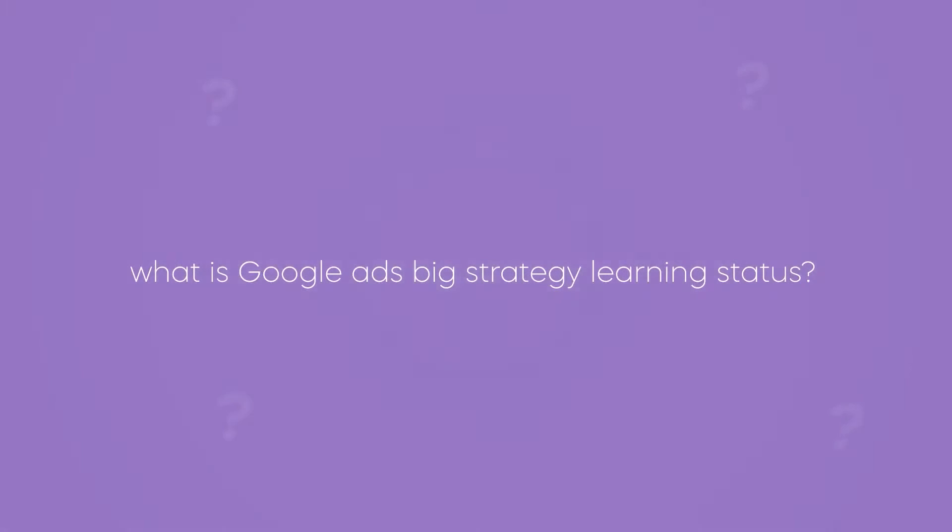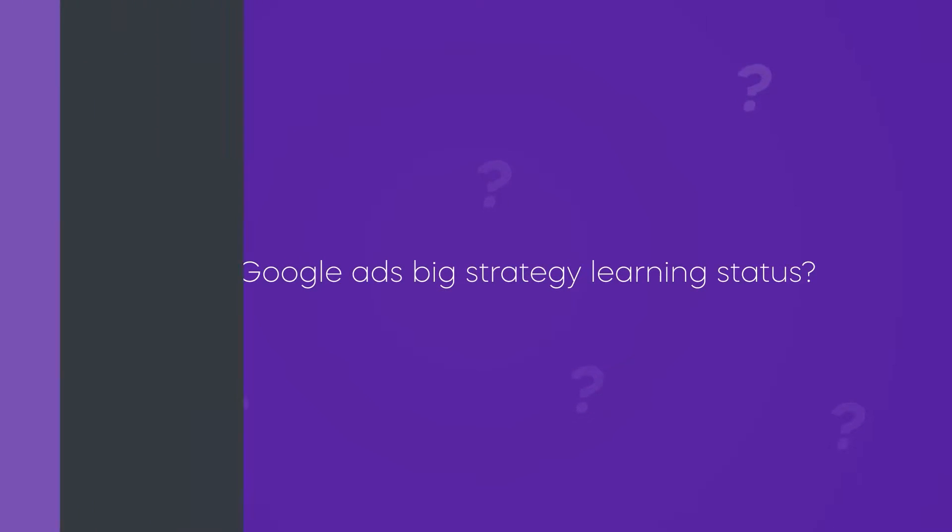Your Google Ads status is set to bid strategy learning. You don't know what you did, but you know you did something and now the account is changing — maybe performance has dipped and you're freaking out. In this video, we're going to address every single thing about bid strategy learning: what it is, why it's important, how long it takes to go away, and how to mitigate it in the future.